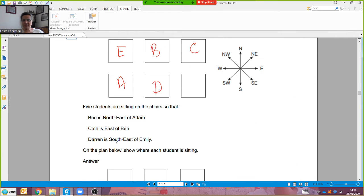So Kathy is east of Ben. I've got three in the correct position. Darren is southeast of Emily so if Emily is up there then southeast is this direction here, so that's where Darren's going to be.